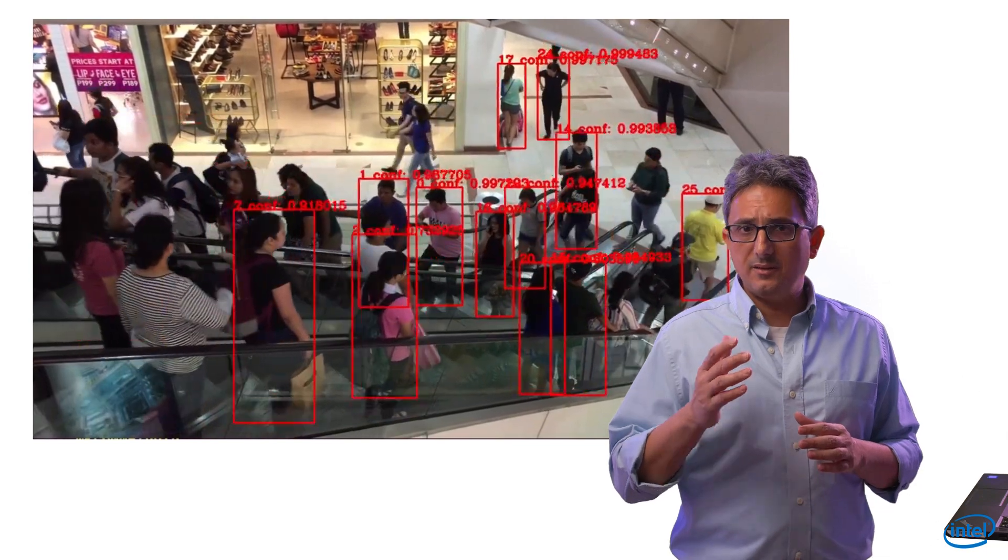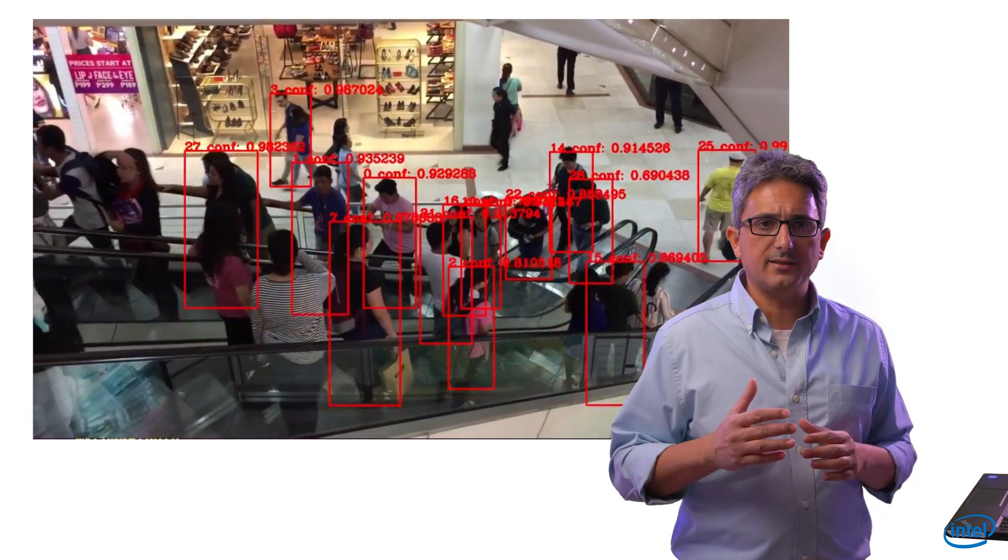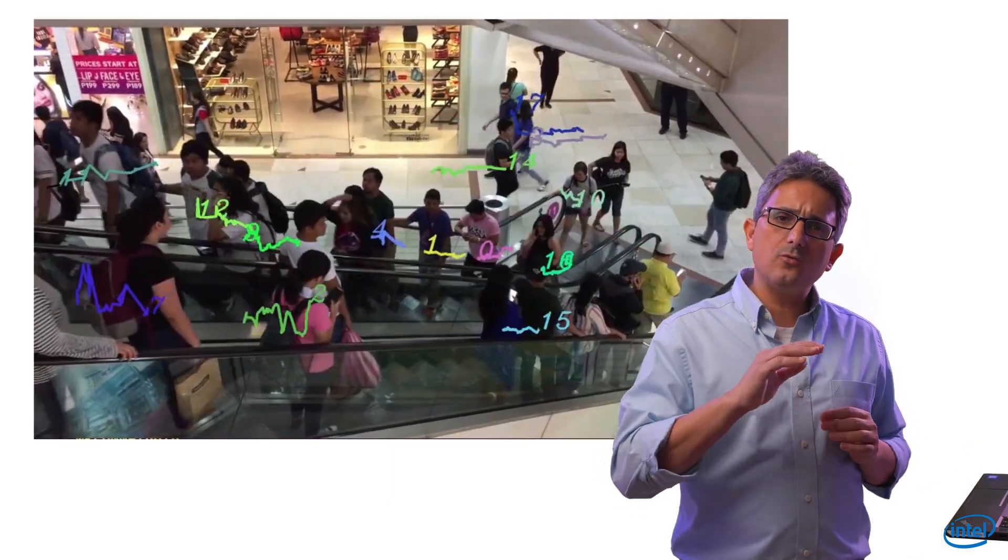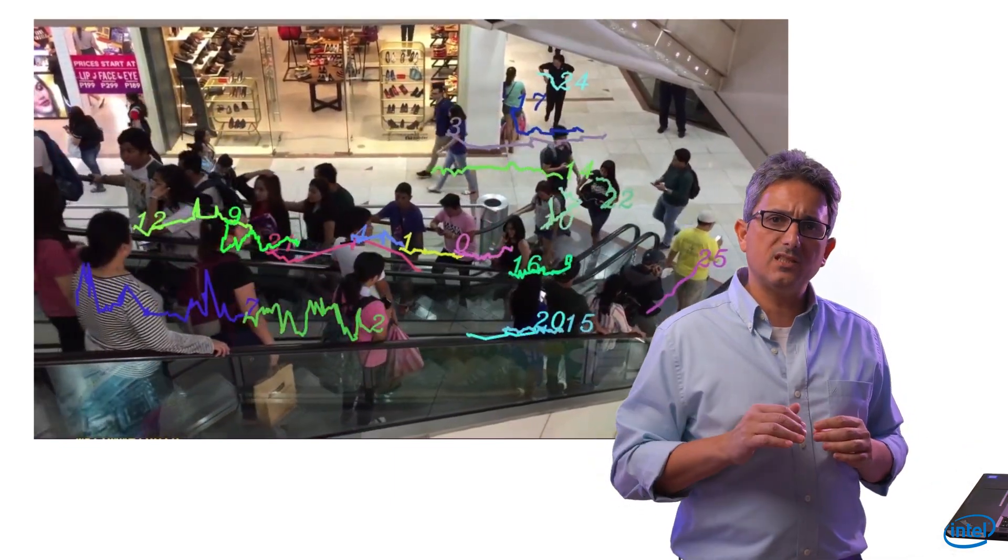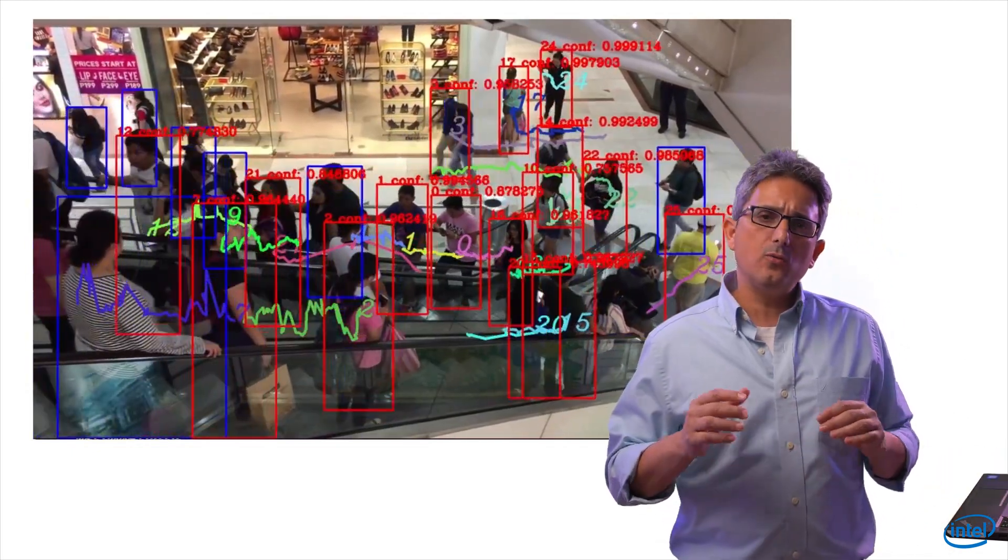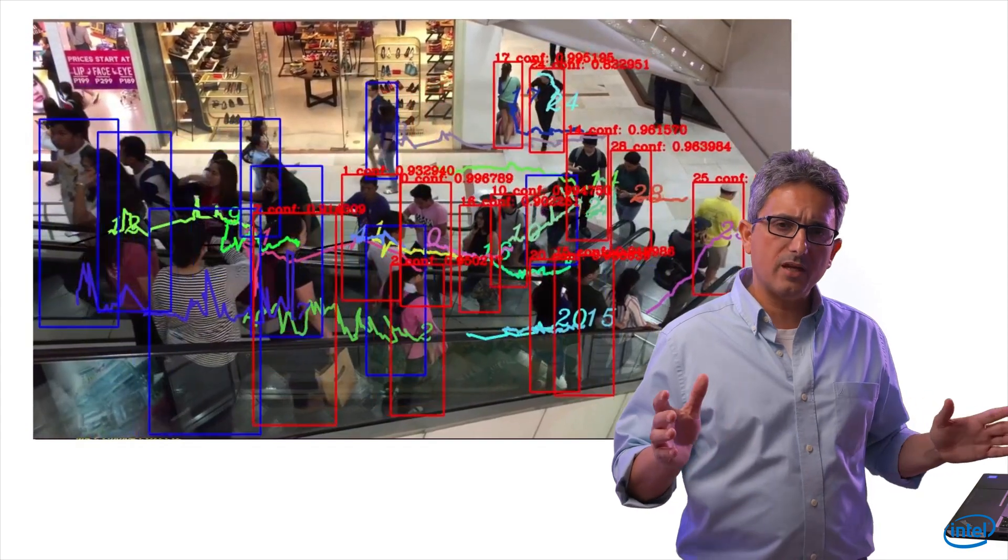A tracked detected person will be marked by a red rectangle. And finally we draw the tracking route of each of these people. And this is what you see when you run the full demo, all of them together.